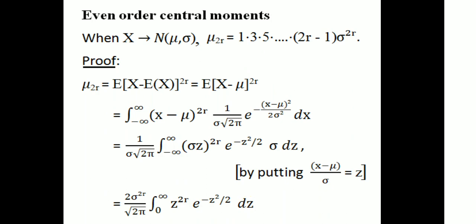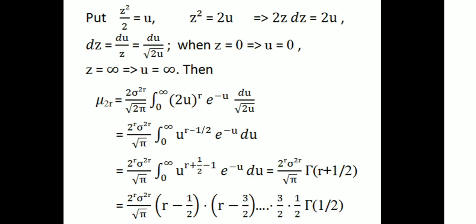Now we apply the substitution u equals z²/2. Then z² equals 2u, so 2z dz equals 2 du, and dz equals du divided by √(2u). Also z equals √(2u). When z equals 0, u equals 0; when z equals infinity, u equals infinity.